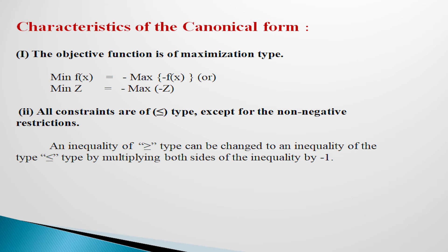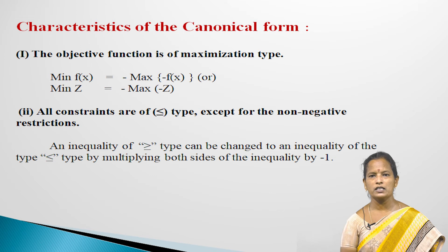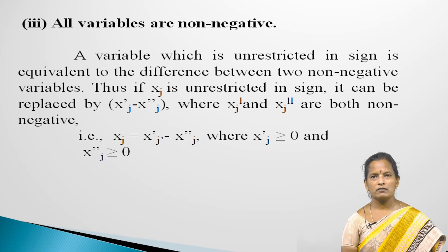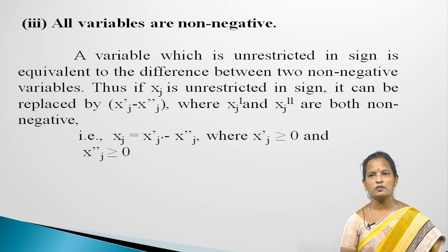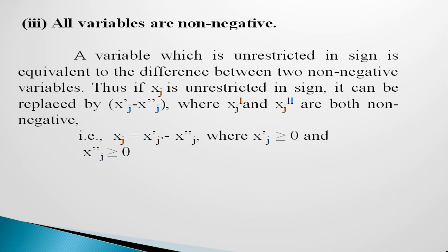Characteristics of the canonical form: First, the objective function is of the maximization type — note that minimize f(x) equals minus maximize of minus f(x), or minimize Z equals minus maximize(minus Z). Second, all constraints are of less than or equal to type except for the non-negativity restrictions; an inequality of greater than or equal to type can be changed to less than or equal to type by multiplying both sides by minus 1. Third, all variables are non-negative; a variable unrestricted in sign can be replaced by xj' minus xj'', where xj' and xj'' are both non-negative.